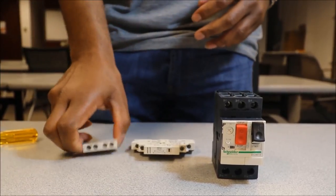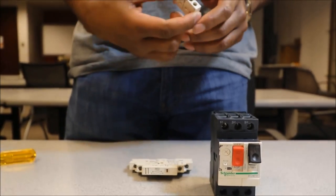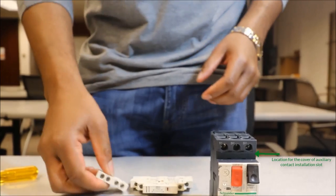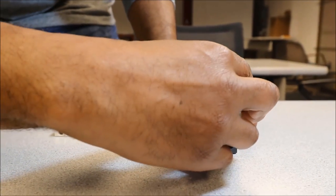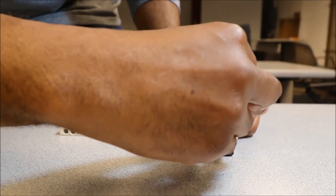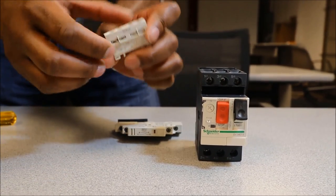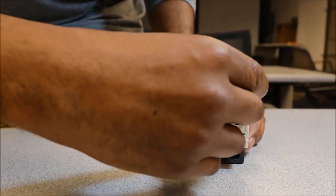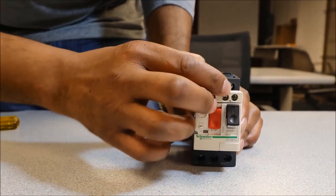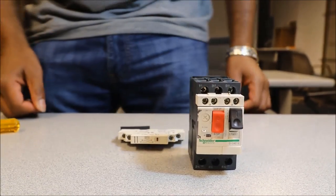To install the front mount GV-A aux contact, this is simply done by removing the cover. It pulls easily off and taking the GV-A aux contact block and sliding in, it will snap into place like so.